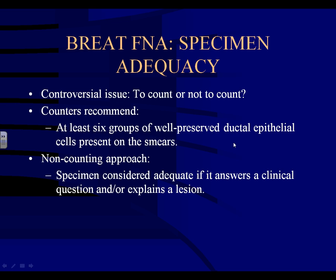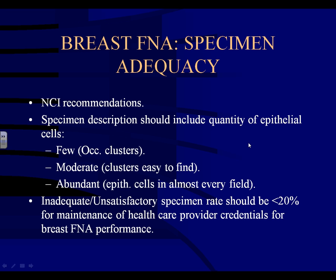The NCI recommendations suggest giving a description of the cellular component — whether there are few, moderate, or abundant epithelial cells present. The normal or benign breast FNA is going to have very few cells. When you start seeing abundant cells, there are two things to think about: fibroadenoma and cancer. Those are the two lesions that will give you a lot of cellularity.